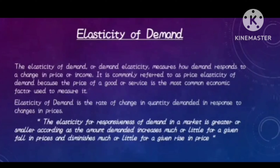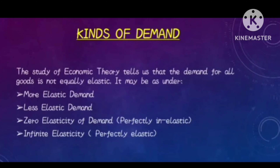The study of economic theory tells us that demand for all goods is not equally elastic. There are several kinds of demand according to its elasticity: number one, more elastic demand; number two, less elastic demand; number three, zero elasticity of demand — termed as perfectly inelastic; and number four, infinite elasticity — termed as perfectly elastic. Let's take a detailed overview of each kind with graphical representation.